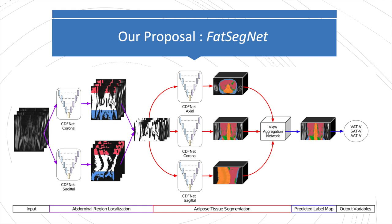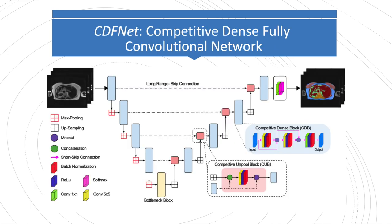First, localization of the abdominal region; then tissue segmentation on the region of interest; and finally, view aggregation. The introduction of CF-NET inside the pipeline boosts competition among filters to improve feature selectivity within the network. CF-NET introduces competition at a local and global scale by substituting concatenation layers with max-out activations.